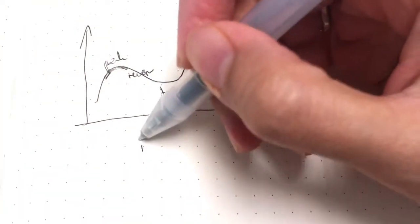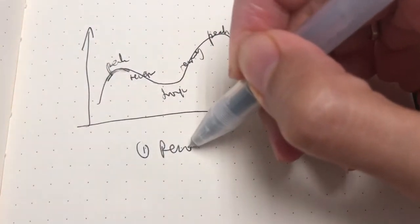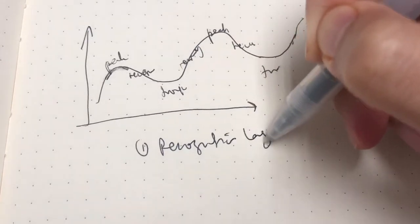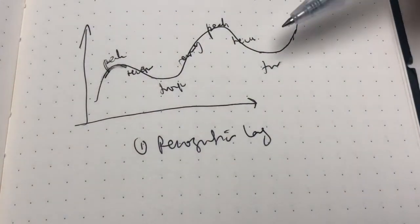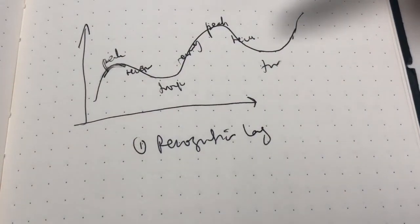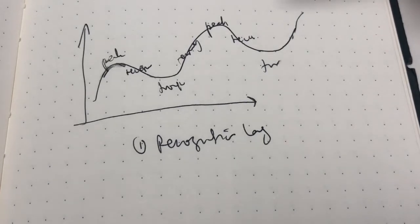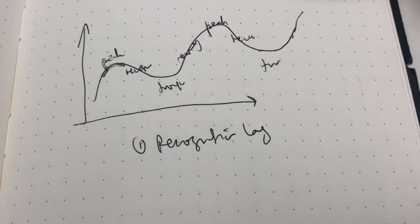One is known as the recognition lag. Since business cycles can be irregular, governments may be unwilling to take action until they are convinced that the problem is serious.